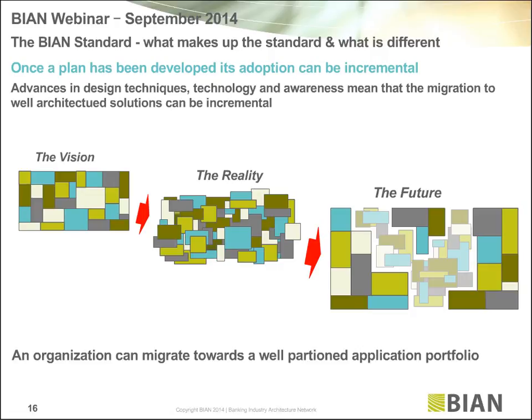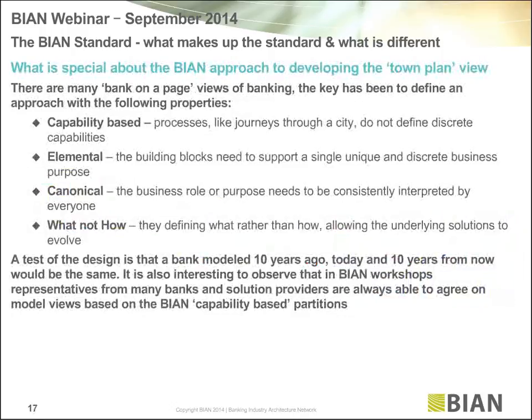On page 17, I'll give you some of the properties and reasons why we've gone down this path in BIAN. The model is capability-based as opposed to process-based because processes are dynamic — they're like journeys through the city and you can have many of them. Capabilities, like buildings in a city, are discrete and much more stable, so they form a much stronger base on which to establish a non-changing standard.